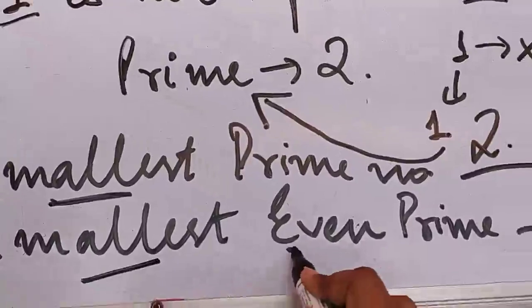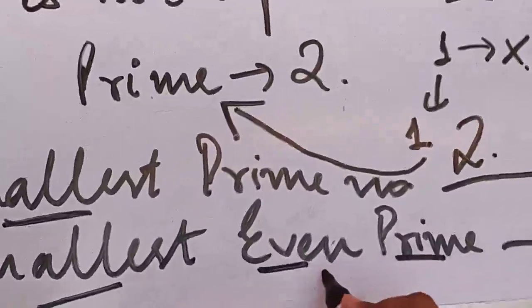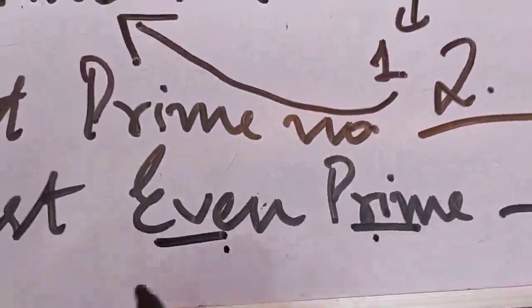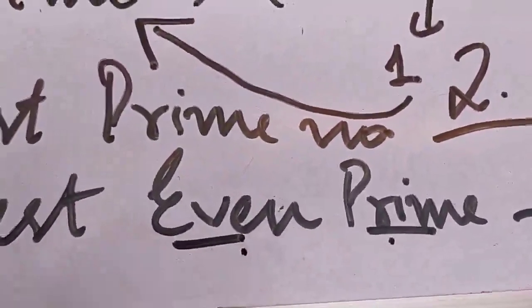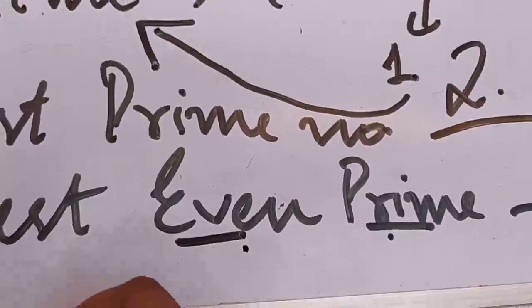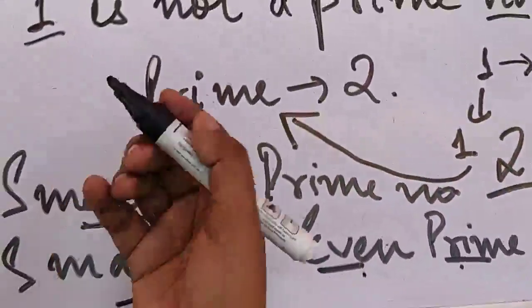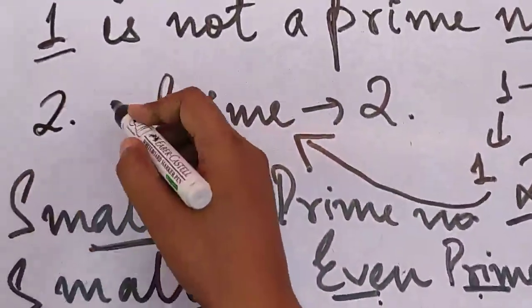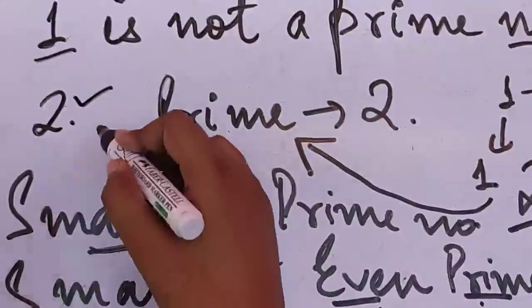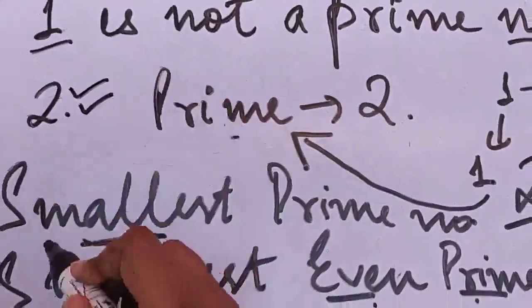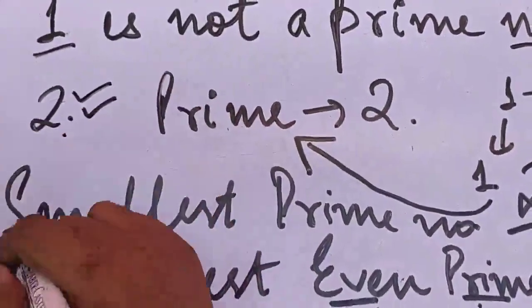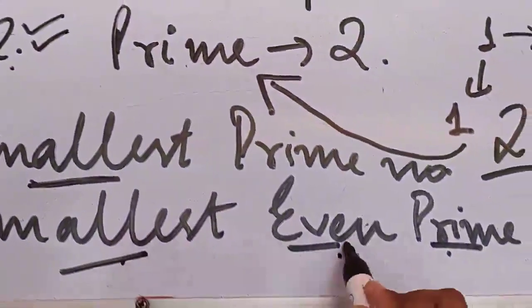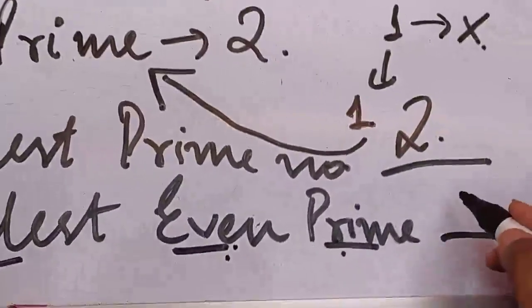Now smallest even prime number, what does this mean? Two terms are used here, one even and one prime. That means it should be both prime and even, and it should also be the smallest. If we talk about prime numbers, where do prime numbers start from? From 2. So is 2 even? Yes, it is an even number. Is 2 prime? Yes, it is a prime number. And 2 is also the smallest number. That means all three terms are satisfied by 2. It is smallest, it is even, it is prime. So what will come in this blank? 2.